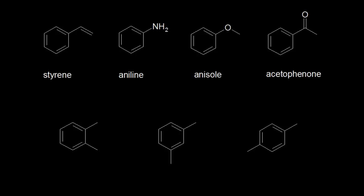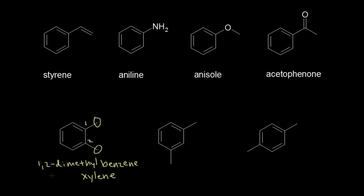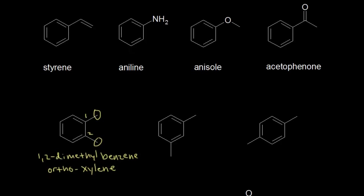Let's look at some disubstituted benzene derivatives. This first molecule has two methyl groups coming off the benzene ring — one at carbon 1 and one at carbon 2. We could call this 1,2-dimethylbenzene as an acceptable IUPAC name. But whenever a benzene ring has two methyl groups, the common name is xylene. When two groups are right next to each other on the ring, that relationship is called ortho, so this molecule is ortho-xylene, or o-xylene.